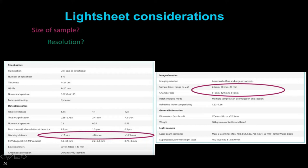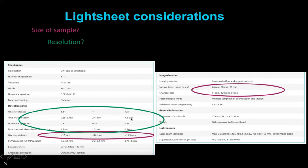Then, your resolution. Can you get the resolution that you want? For this, you want to look at the lens magnification—or total magnification including the zoom—and your numerical aperture, which gives you the maximum resolution.